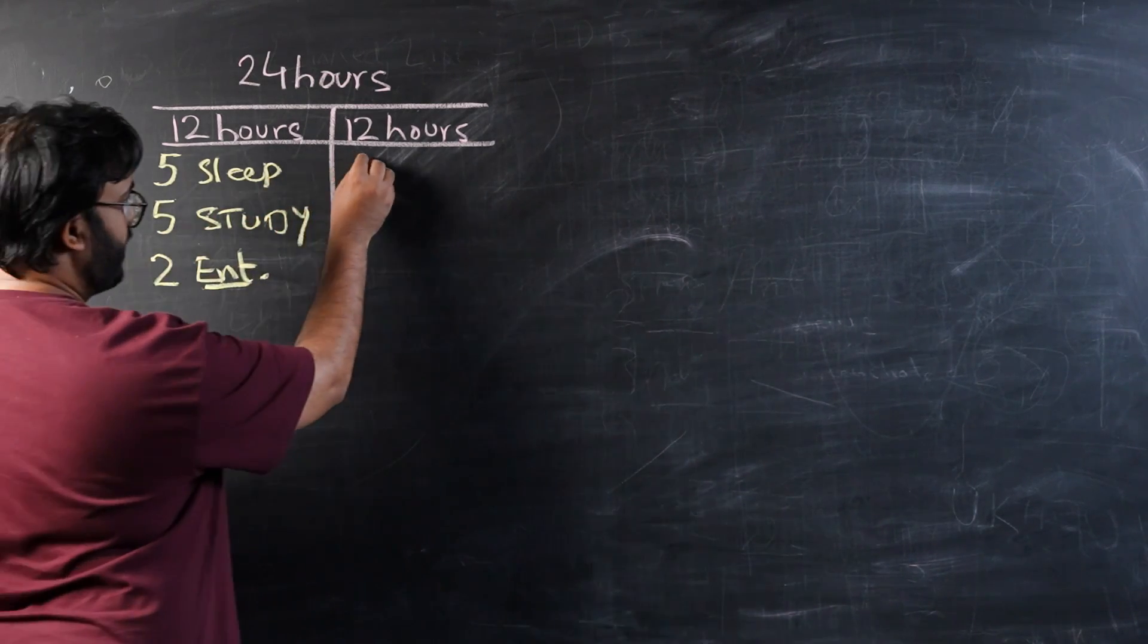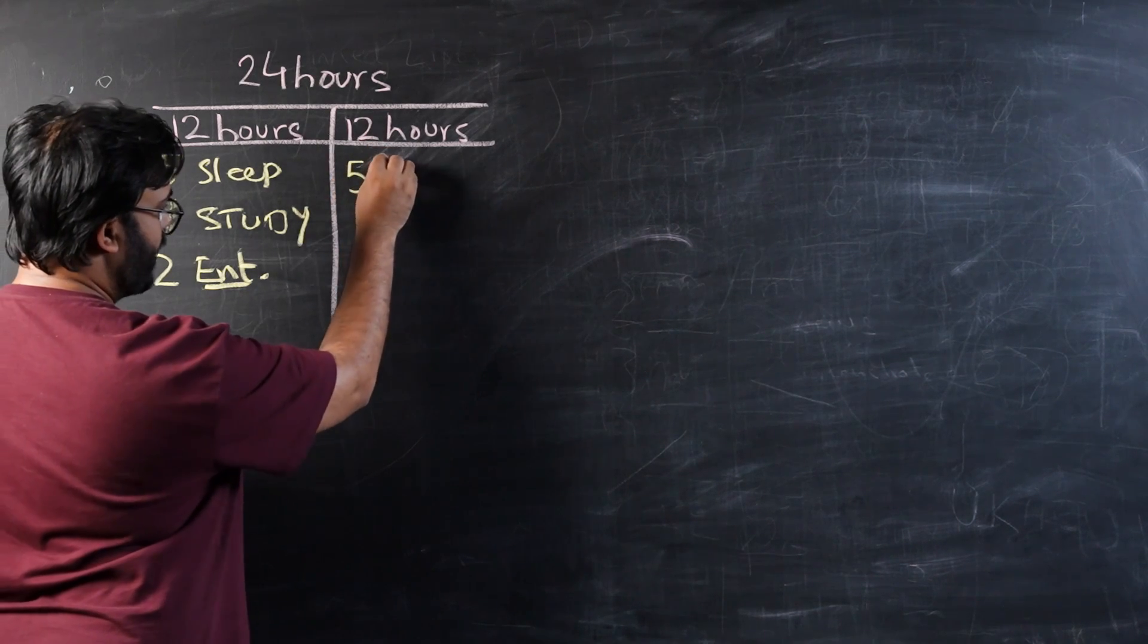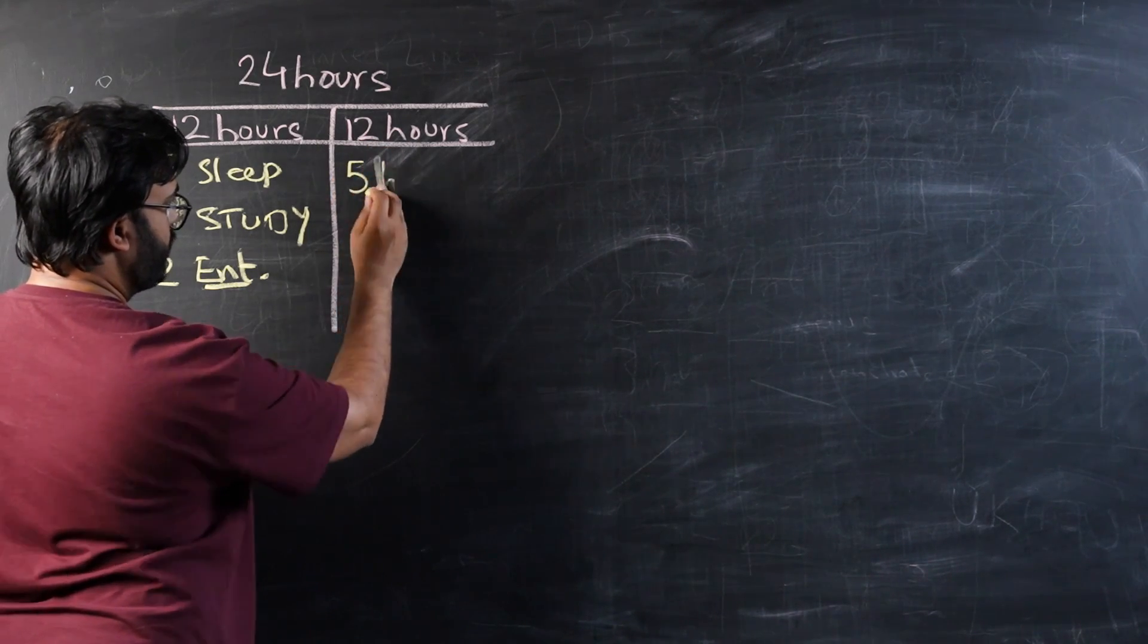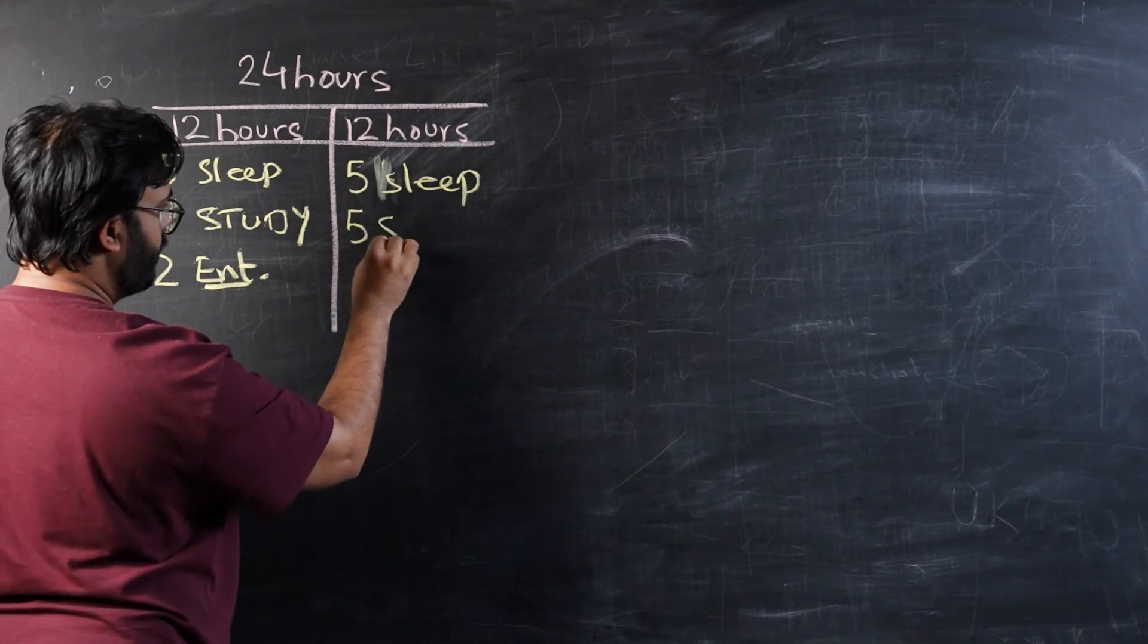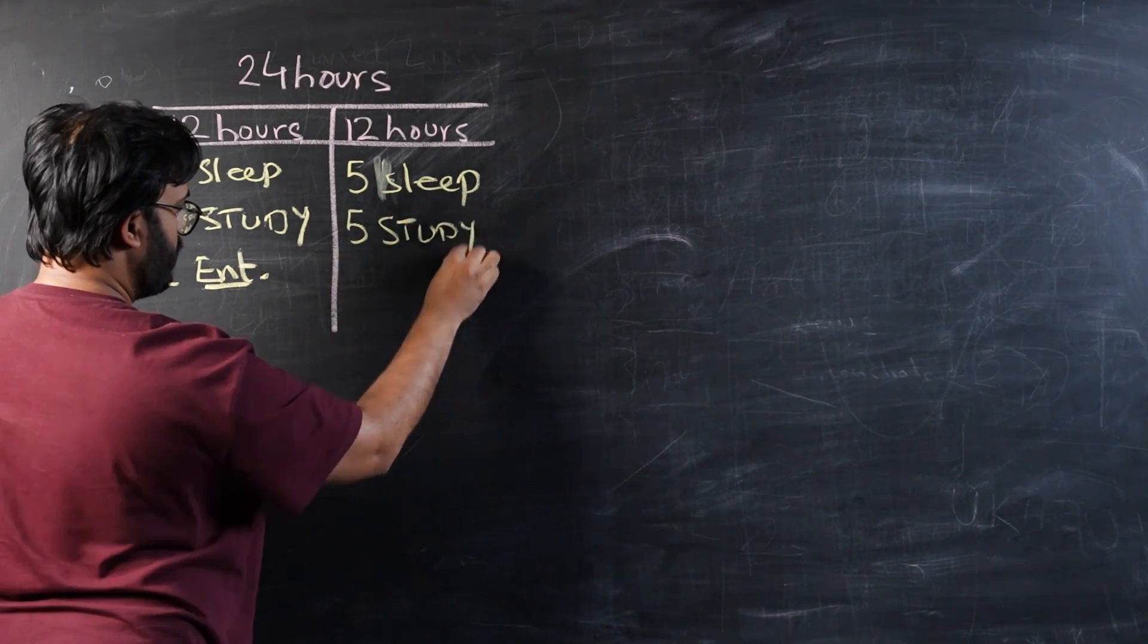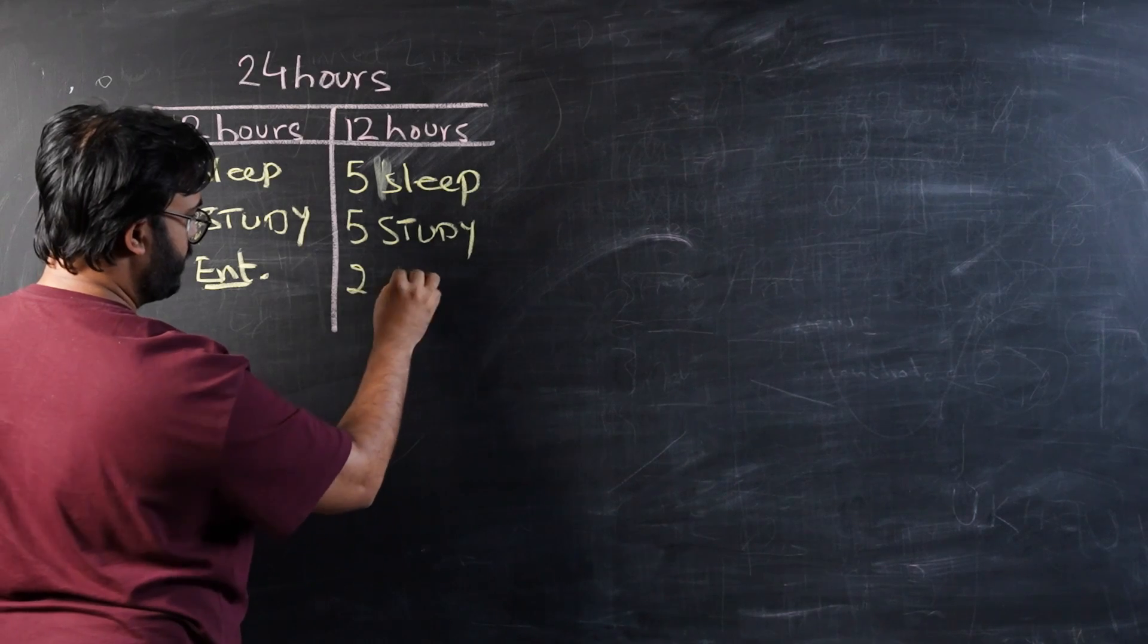And then after this 2 hours, now we come to next 5, 5, 2. So now again, you go for 5 hours of sleep. There is a common mistake many students do, and I'm going to talk about it. And then 2 hours of entertainment again.